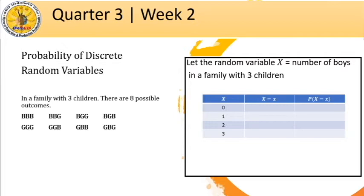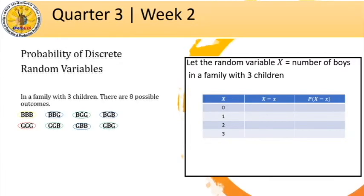Notice that the number of outcomes is different for every possible values of x. To illustrate this, I encircled all the outcomes with red if x equals 0, green if x equals 1, blue if x equals 3, and yellow if x equals 4. So we can now complete the second column of our table based on the illustration.